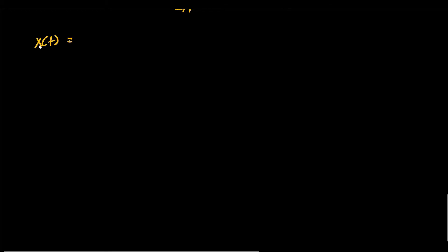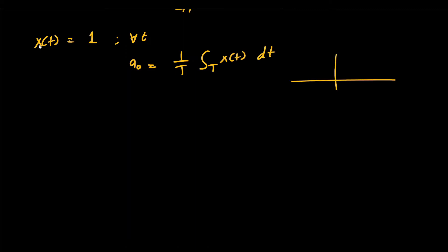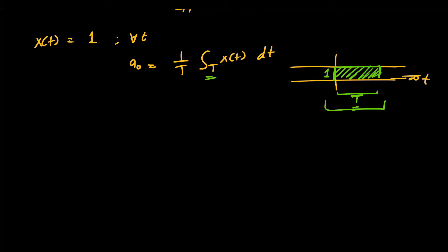Next, say we have a DC signal x(t) equals 1 for all values of t. To find a_0 we compute (1/T) times the integral over one period of x(t) dt. Since the signal has amplitude 1 over the entire period T, the overall area is simply 1 times T, which equals T. Therefore a_0 equals (1/T) times T, which is simply equal to 1.